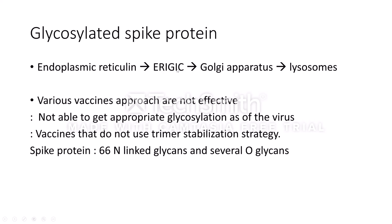After the ER, the spike protein goes to the ERGIC — the endoplasmic reticulum intermediate Golgi apparatus compartment — where virus budding of the spike protein occurs. The spike proteins protrude on the virus surface, and further N-glycosylation and O-glycosylation occur on the virus. It then goes to the Golgi apparatus, which has three components — cis, medial, and trans — where further processing of the N-glycans and O-glycosylation occurs.